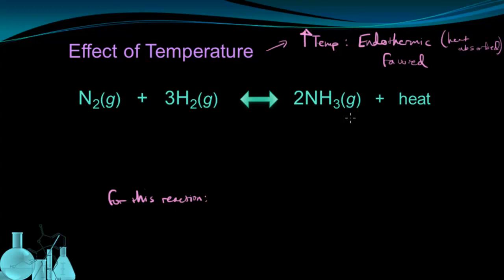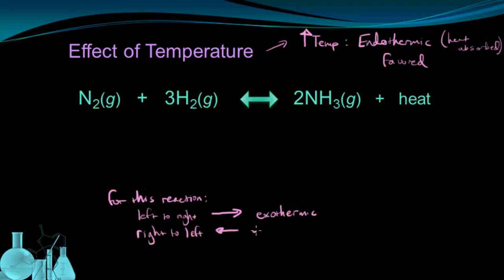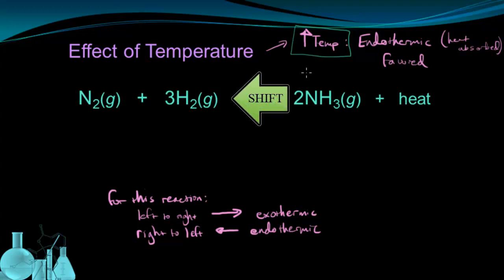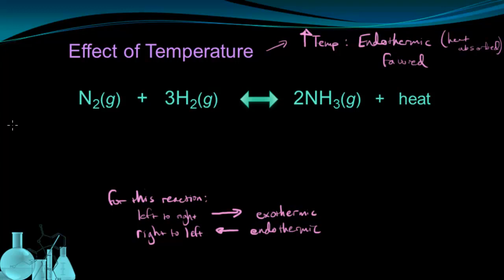For this reaction, reading left to right, heat is a product, so the forward reaction is exothermic. Reading right to left, the reverse reaction is endothermic. An increase in temperature favors the endothermic process, meaning a shift to the left in the reverse direction. It's actually easier to treat heat as a reactant or product just like with concentration changes. For example, a decrease in temperature means I have less heat — I'm removing something from the product side, so the product side is less than the reactant side, giving a shift to the right. This method works well for both temperature and concentration, as long as we treat temperature as a reactant or product.